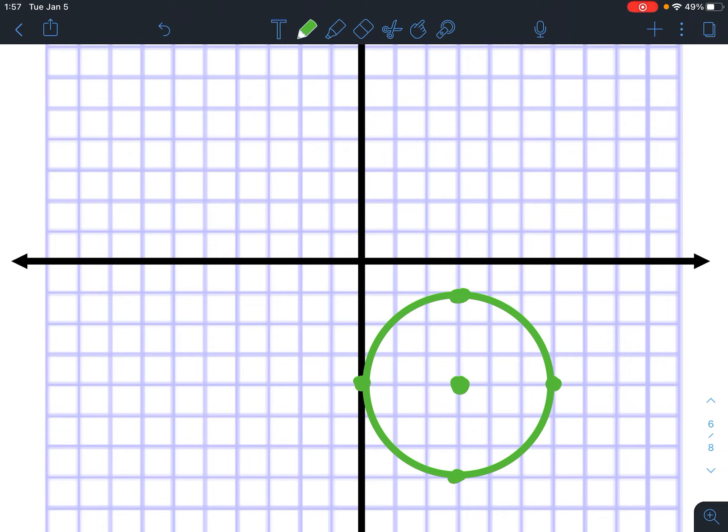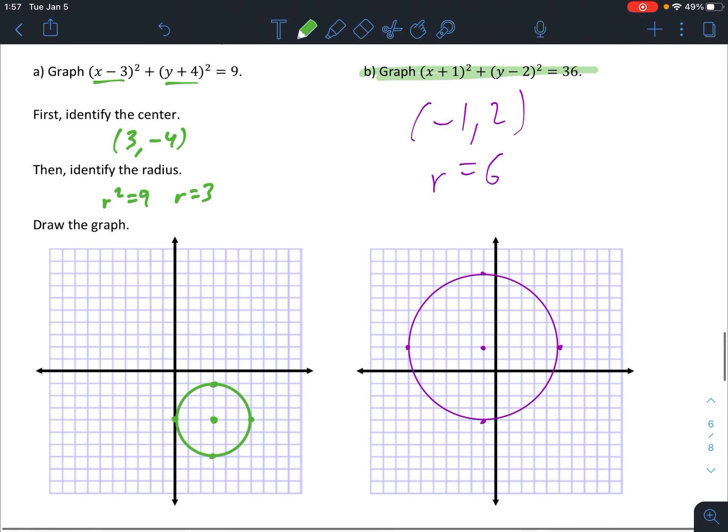One more time, pause the video here and try 4b. Here are your answers for problem 4b. Center at negative 1, 2, radius of 6, and the circle.